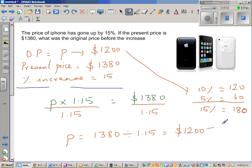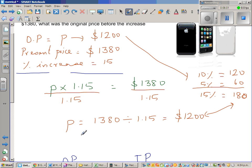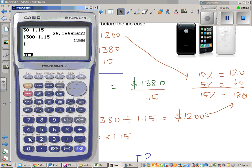And if you add $1,200 plus $180, it's $1,380. Or you can also check like this: 1,200 times 1.15 should be - let us do that - 1,200 times 1.15 is $1,380.